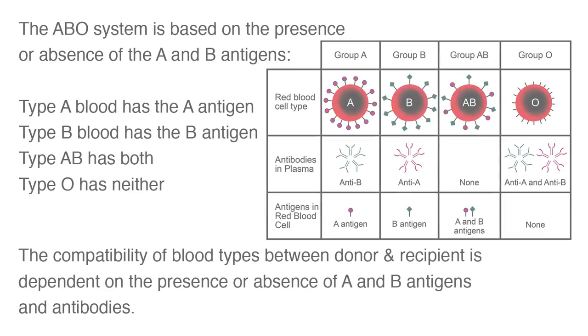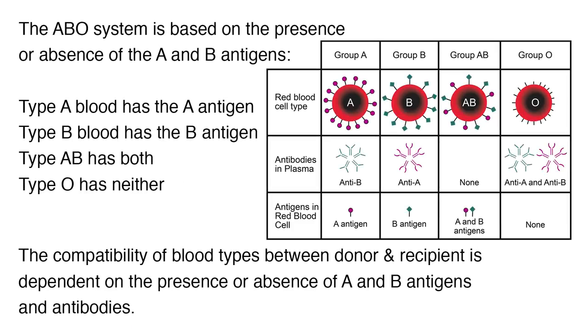When giving a blood transfusion, it is important to know how blood is grouped. The ABO system is based on the presence or absence of the A and B antigens. Type A blood has the A antigen, Type B has the B antigen, Type AB has both, and Type O has neither. The compatibility of blood types between donor and recipient is dependent on the presence or absence of A and B antigens and antibodies.